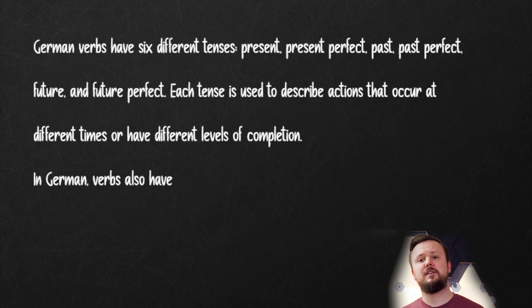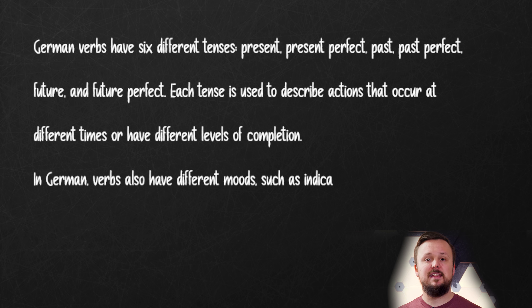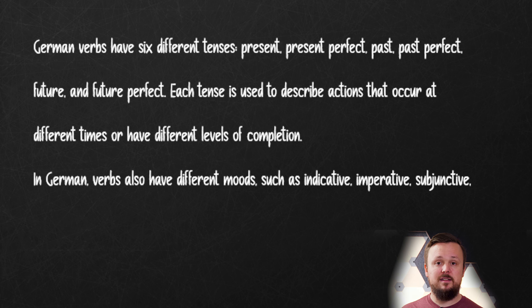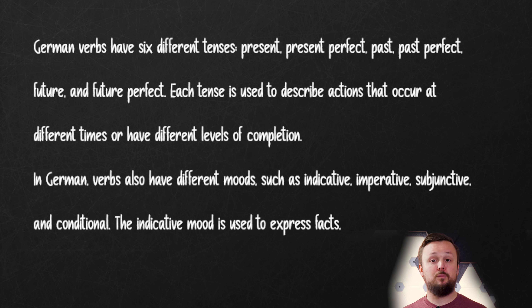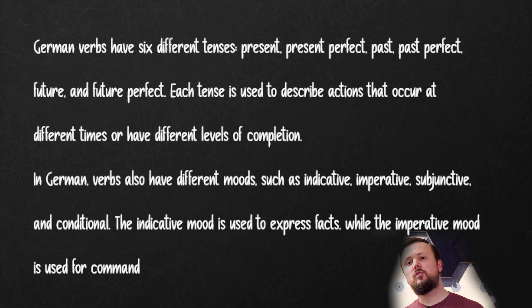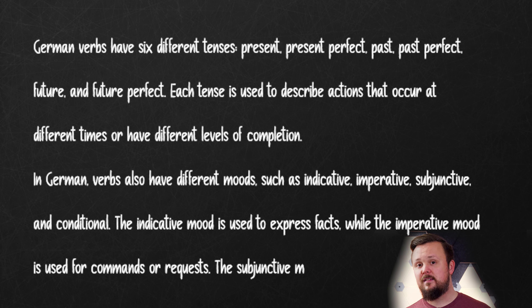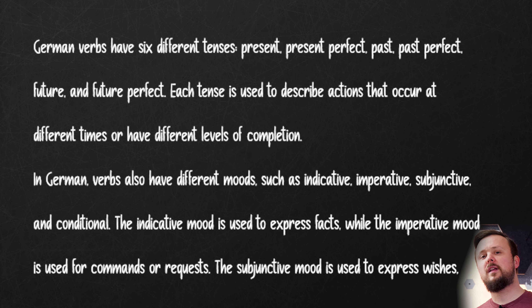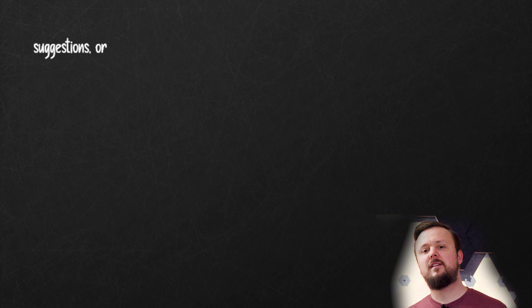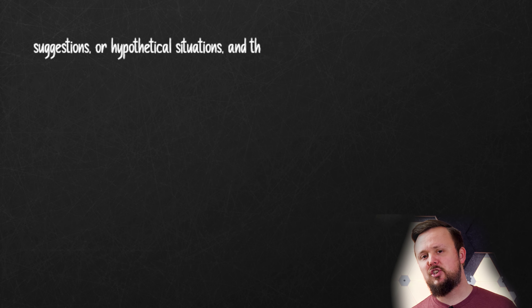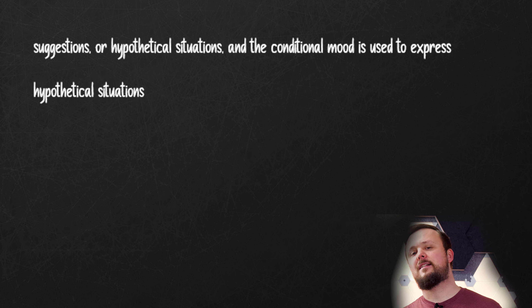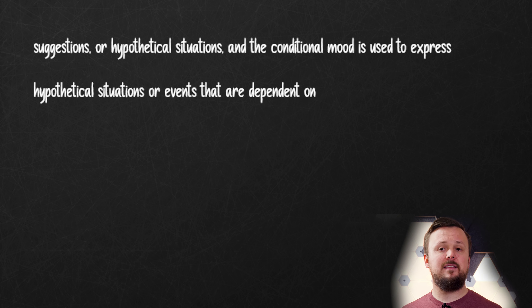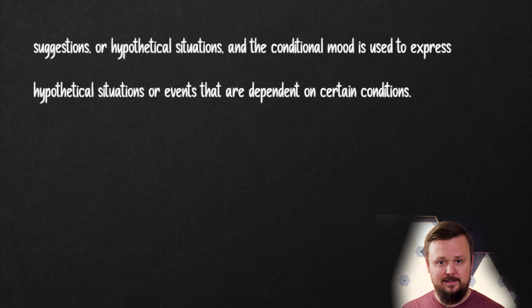German verbs also have different moods such as indicative, imperative, subjunctive, and conditional. The indicative mood is used to express facts, while the imperative mood is used for commands or requests. The subjunctive mood is used to express wishes, suggestions, or hypothetical situations. And the conditional mood is used to express hypothetical situations or events that are dependent on certain conditions.